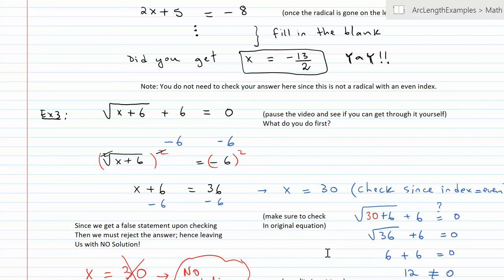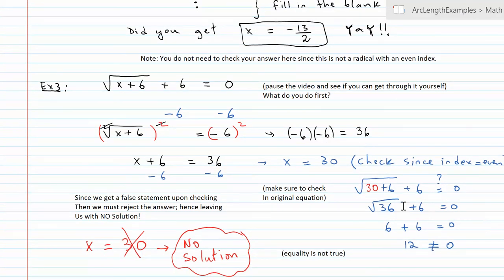So here again, be careful, because negative 6 multiplied by negative 6 should give you positive 36. Once you check 30 by going back to the original equation, you get a false statement. So, therefore, you must reject 30, and you'll be left with no solution.